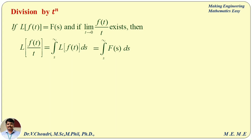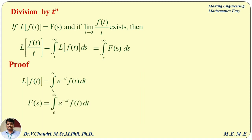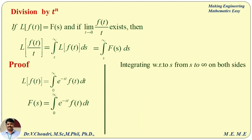Now let us see the proof of this theorem. We know the formula L of f(t) equals integral from 0 to infinity of e^(−st) f(t) dt, where L of f(t) equals F(s). Unlike the multiplicity formula where we differentiate with respect to s, here we integrate with respect to s from s to infinity on both sides. So integral from s to infinity of F(s) ds equals integral from s to infinity of integral from 0 to infinity of e^(−st) f(t) dt ds.